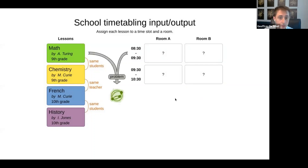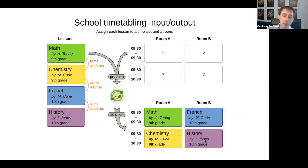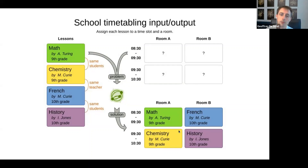You give this to a constraint solver and it outputs a solution. In this case it tells you: do math in room A at 8:30, French in room B at 8:30. The ninth grade can do all its lessons, the tenth grade can do all its lessons, and Marie can teach both lessons — in different rooms, but she doesn't need to be in two places at once.